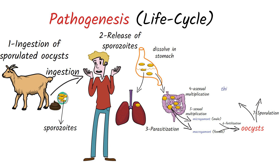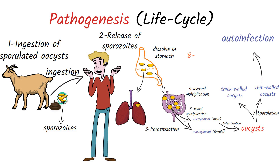Thick-walled oocysts are commonly excreted from the host, and thin-walled oocysts are primarily involved in auto-infection. Oocysts are infective upon excretion, thus permitting direct and immediate fecal-oral transmission. The life cycle allows cryptosporidium to infect a wide range of hosts and to persist in the environment through the resistant oocyst stage.